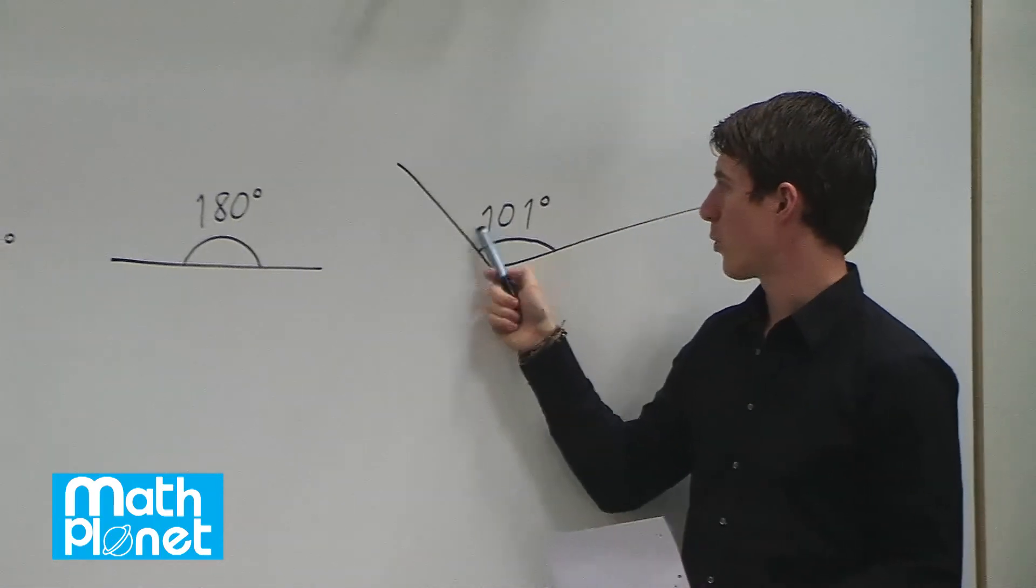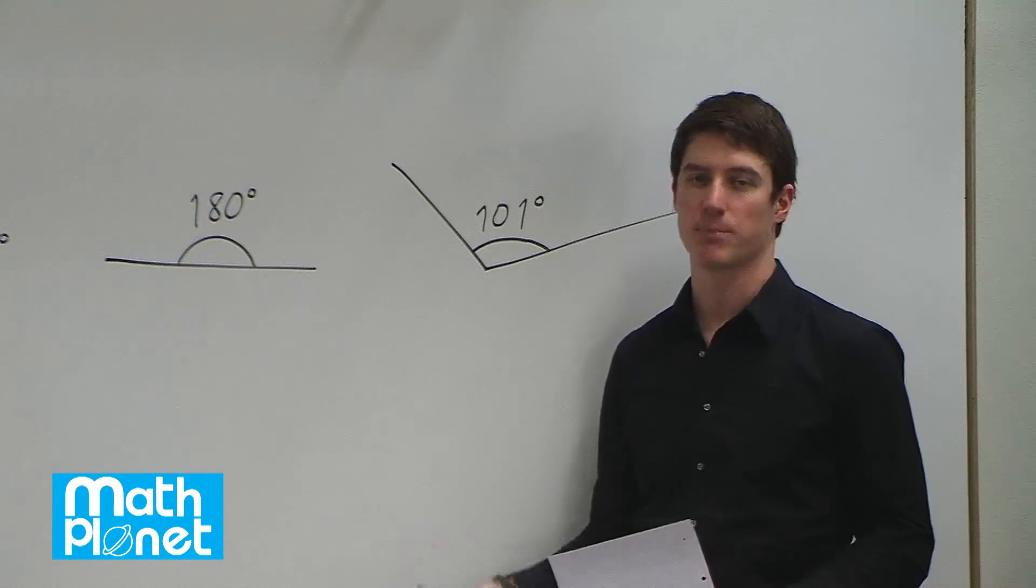And finally we have another angle of 101. It's greater than 90, so it's also obtuse.